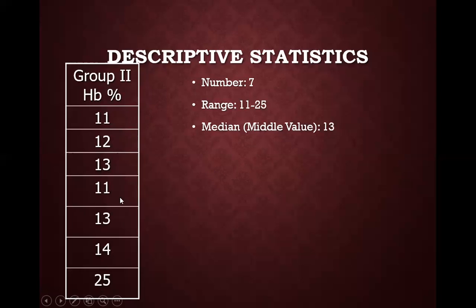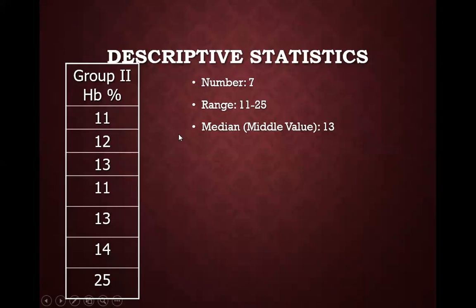This is the second group. There are 7 observations of hemoglobin, so the count is 7. The range is from 11 gram percent to 25 gram percent, and the median or middle value is 13. So these were two groups and the descriptive statistics of each.